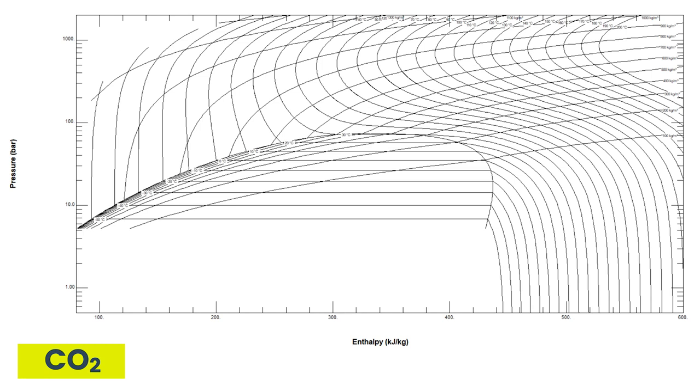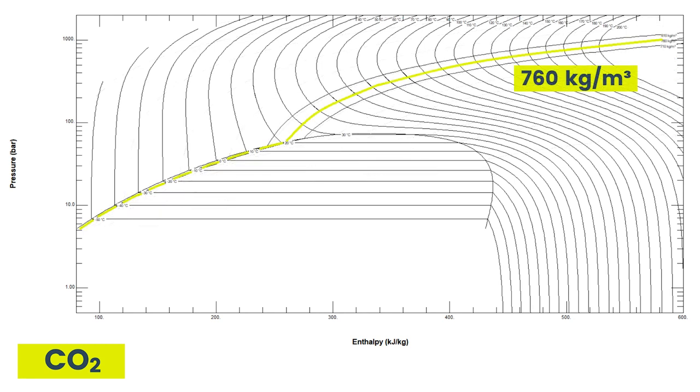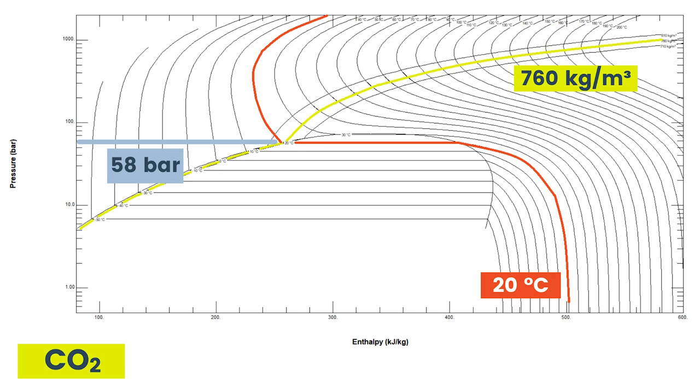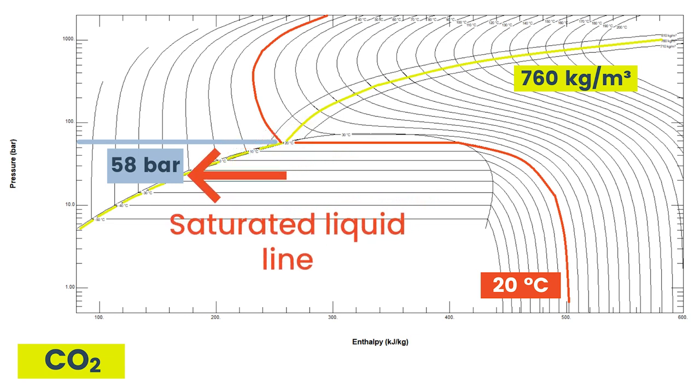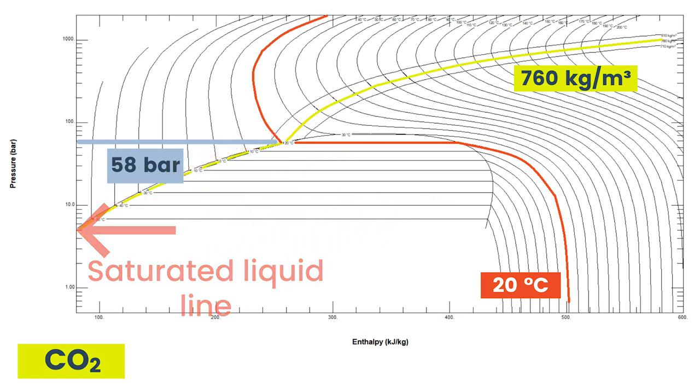Going back to the pressure-enthalpy chart and highlighting this line of constant density, we just need a constant temperature line. Here is the 20°C line, and we can see that where they intersect, the pressure is around 58 to 60 bar. It's also interesting to note that this point sits on or around the saturated liquid line — so the contents of this cartridge are almost entirely in the liquid phase. That's why we can't use the ideal gas law or Charles's Law.